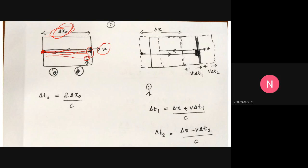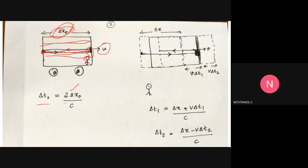So delta x0 is the proper distance. Let's take a look at a little bit of time dilation. The total distance divided by velocity gives the time. For the person inside the train, the time is 2*delta_x0 divided by c.